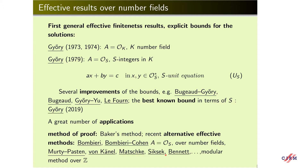The first general effective finiteness result with explicit bounds were obtained in the 70s. It should be remarked that independently, Striduk, Kotov, and Tralina obtained similar but slightly less general results with less explicit constants. An equation of this form where the solution belongs to S-units of a number field is called an S-unit equation. Several upper bounds have been obtained, and I shall mention the results of Bijou, Evertse, and myself, and Le Foune. The optimal bound in terms of S was obtained last year.